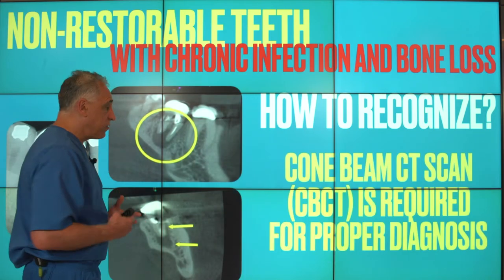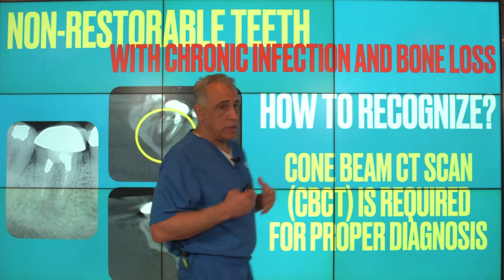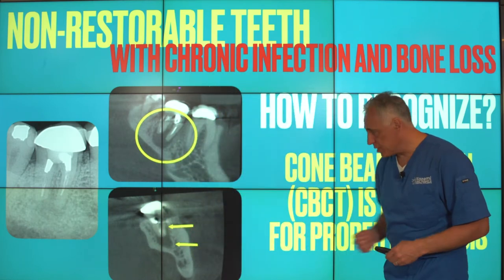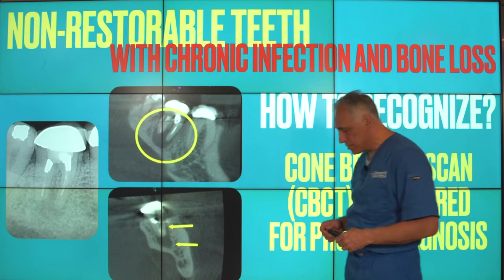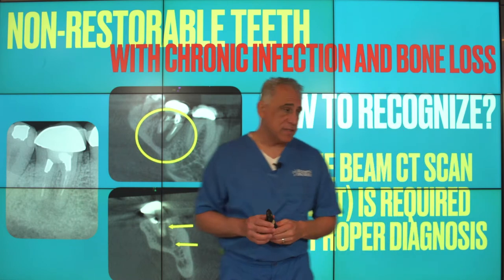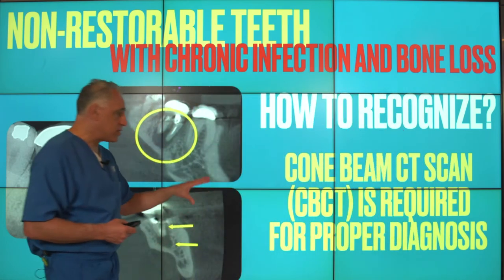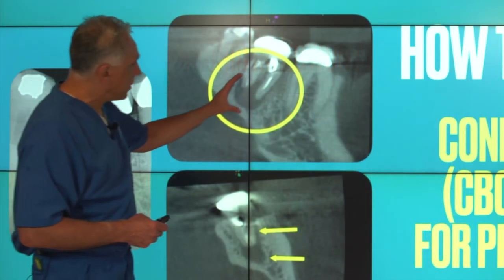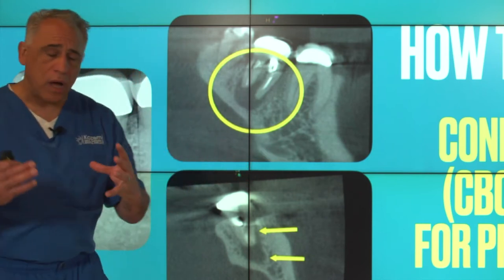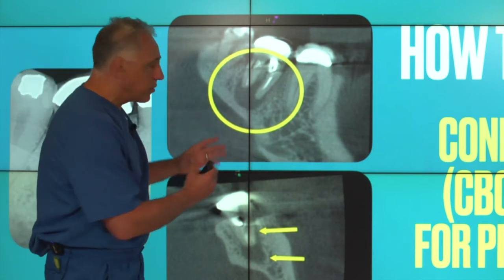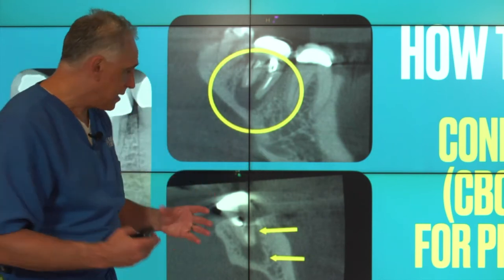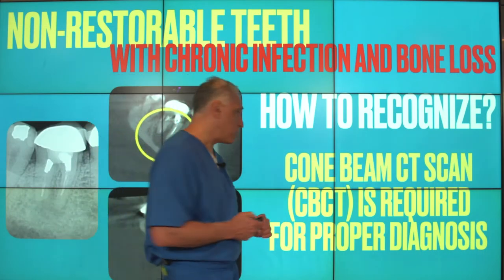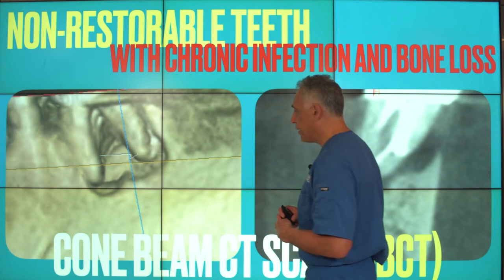For recognition and diagnosis it is absolutely important and vital to use three-dimensional imaging. This is known as a cone beam CT scan, or CBCT, which really provides a proper diagnosis of these lesions. It provides an accurate picture of the bone loss, and we can really see the extent of it relative to adjacent teeth and structures much better than with two-dimensional x-rays.